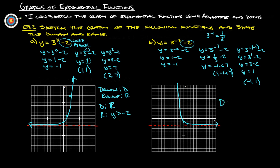For the second function, the domain and range are the same: the domain is all real numbers since the graph goes forever in both directions, and the range is y greater than negative two because it's all above the negative two asymptote line.